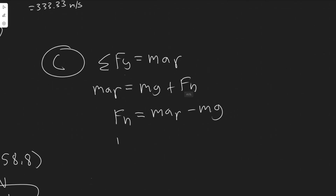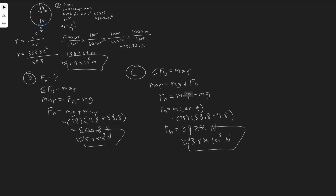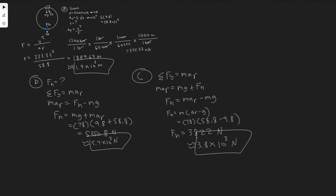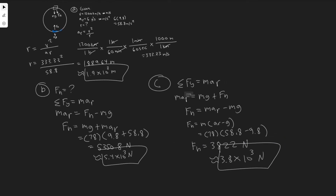Factoring out m: F_N equals m times (a_r minus g). With mass 78 kg, a_r of 58.8, and g of 9.8: F_N equals 78 times (58.8 minus 9.8) equals 78 times 49, giving approximately 3822 newtons — about 3.8 times 10 to the 3 newtons. So the only thing that changes between B and C is direction, which alters the result. Those are the answers to all three parts.